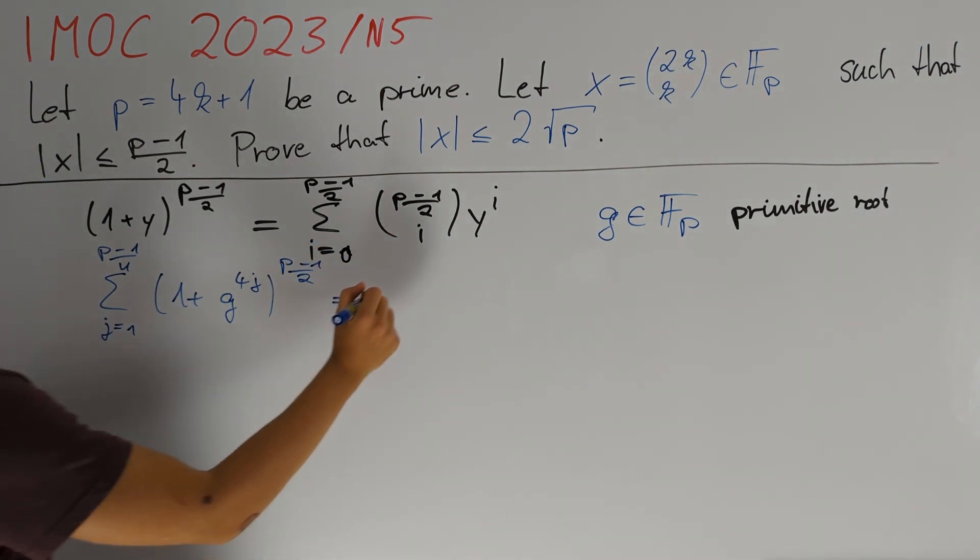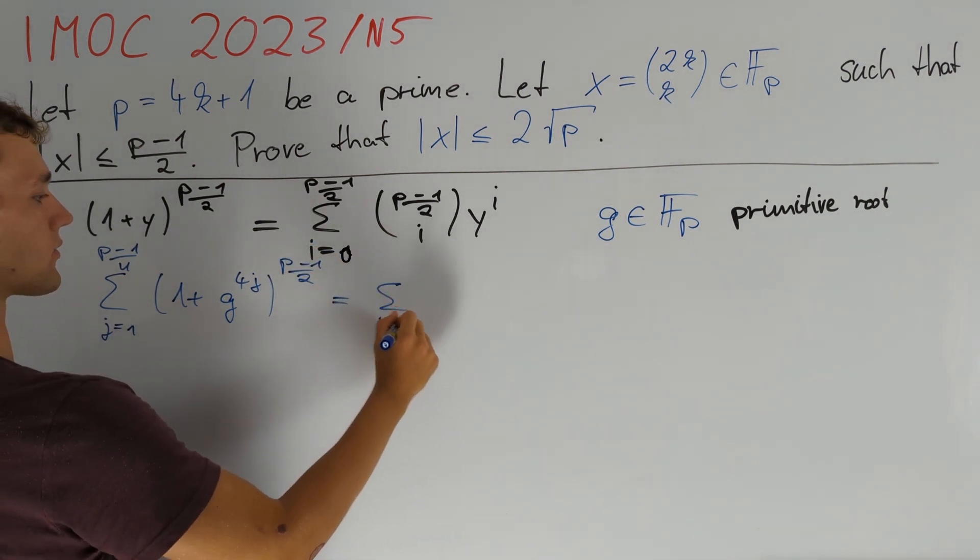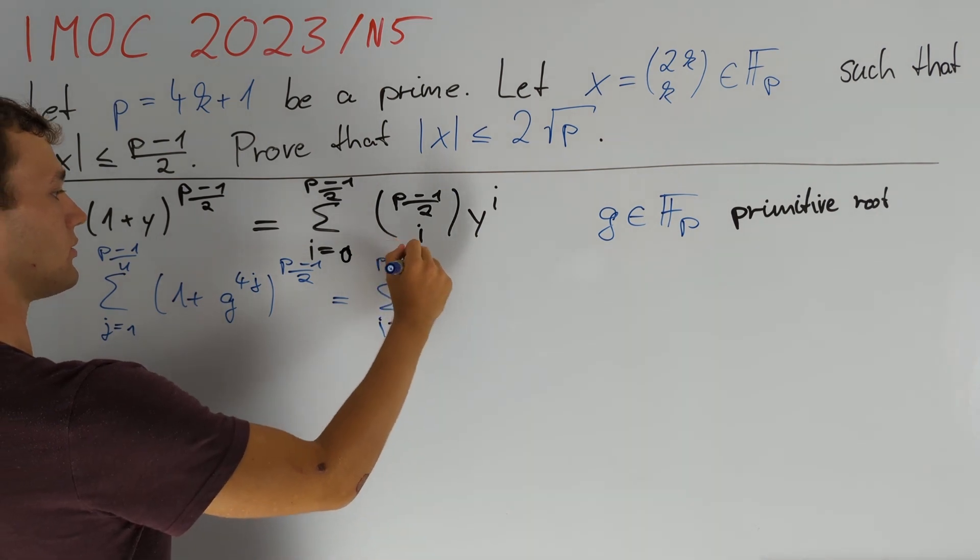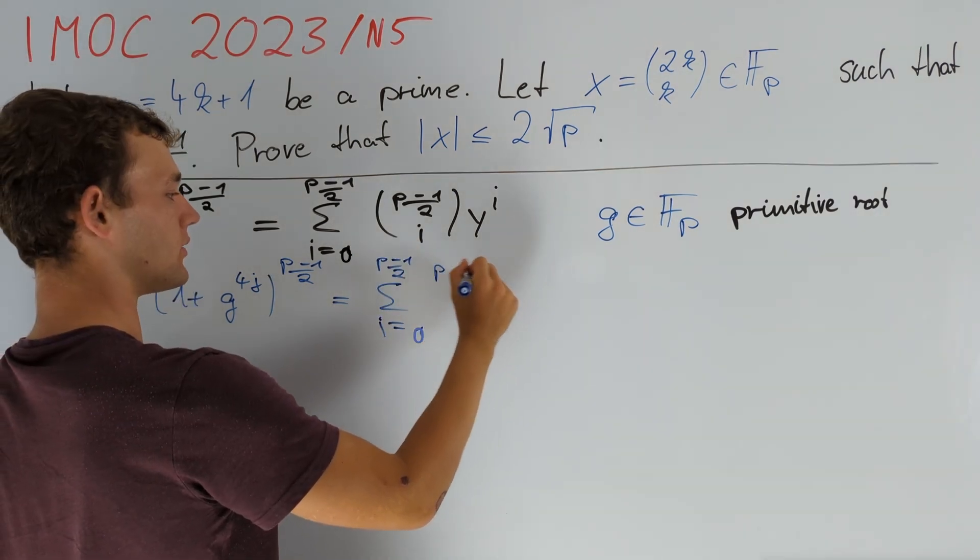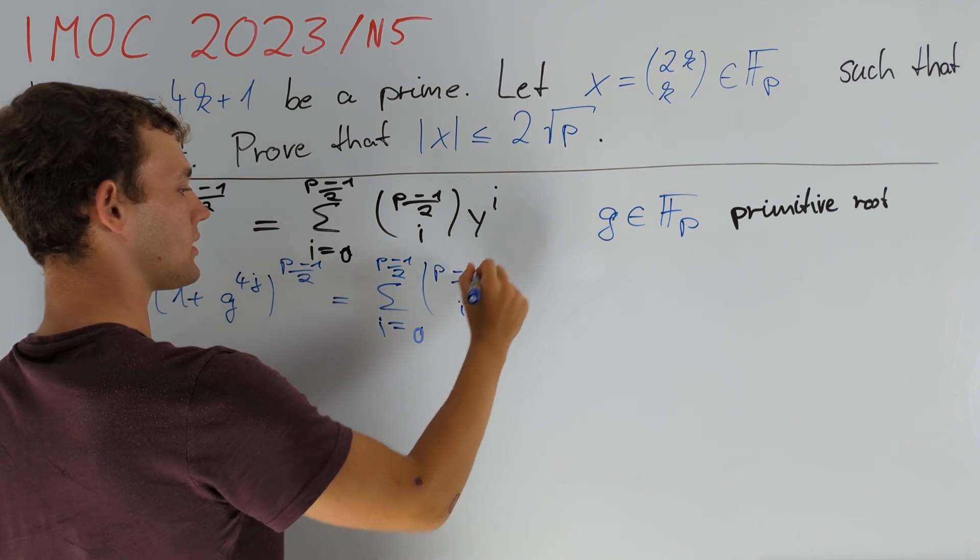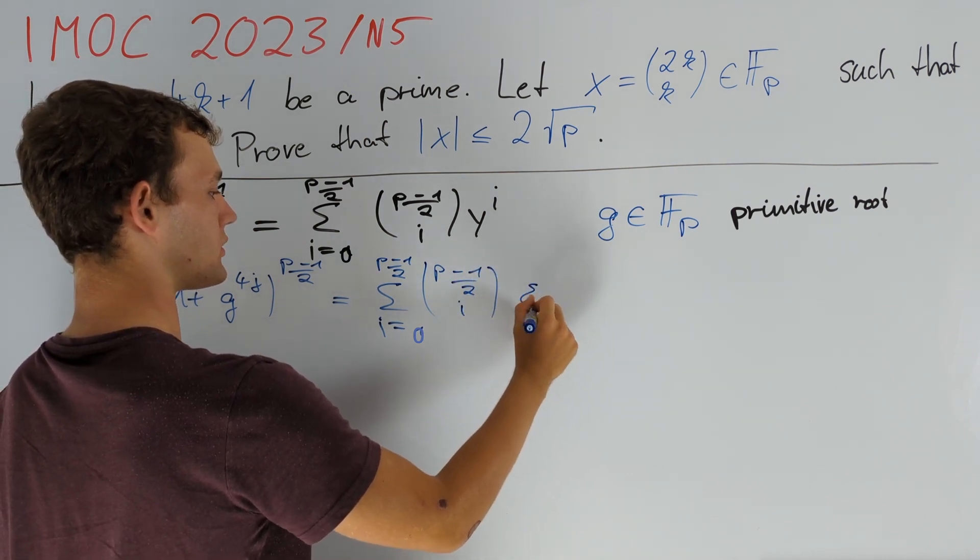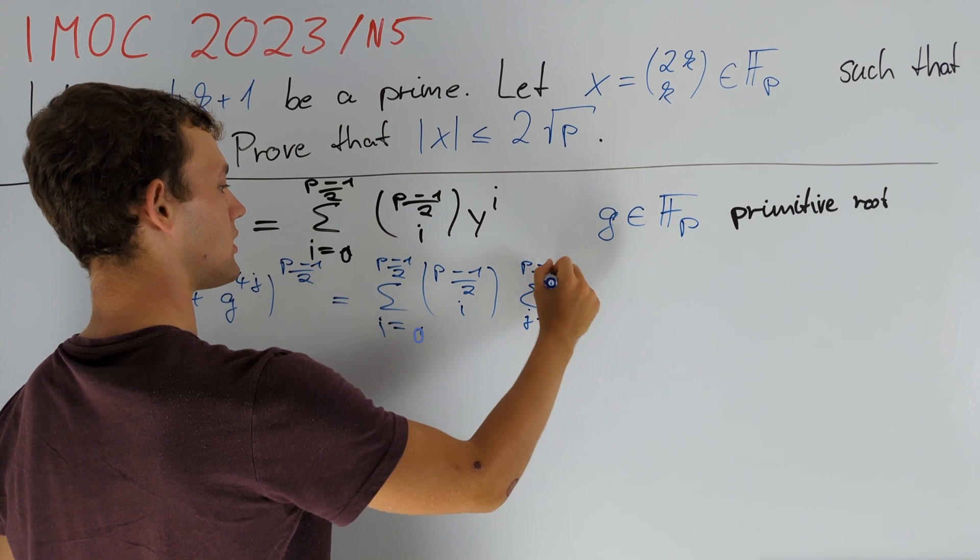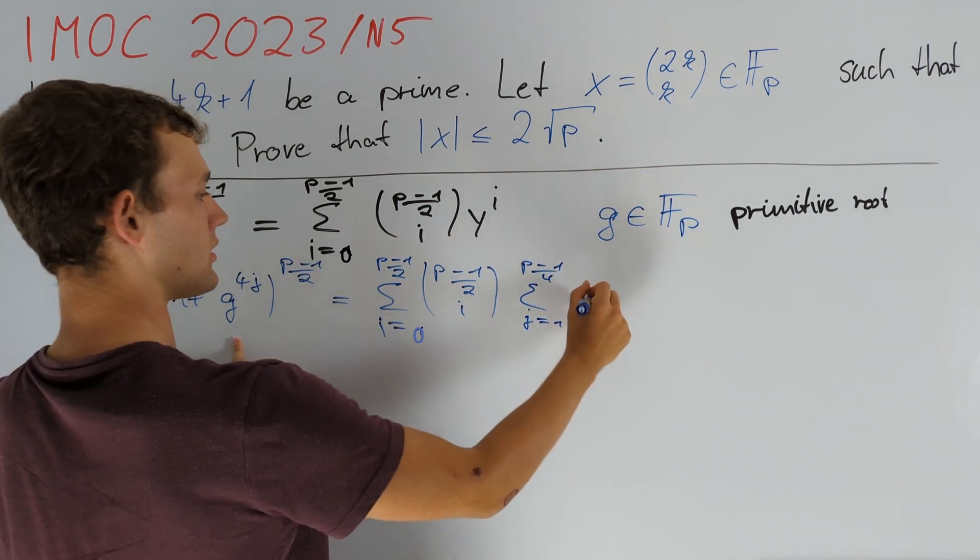In this way we get all of the fourth powers in Fp, which equals the sum of i going from 0 to (p-1)/2 of ((p-1)/2 choose i) times the sum of j going from 1 to (p-1)/4 of g to the power of 4ij.